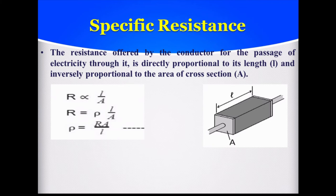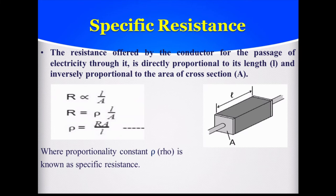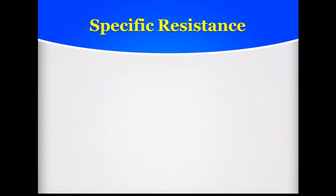R is the resistance, which is directly proportional to length L and inversely proportional to area of cross-section A. Changing the proportionality sign by introducing a constant, we get R = ρ × L / A. Rearranging, ρ = R × A / L, where the proportionality constant ρ is known as specific resistance.